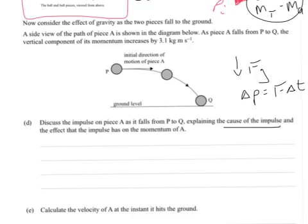So the cause of the impulse is the force due to gravity, and the effect that the impulse has on the momentum has to increase it. So it increases it in a vertical sense, not in a horizontal sense.